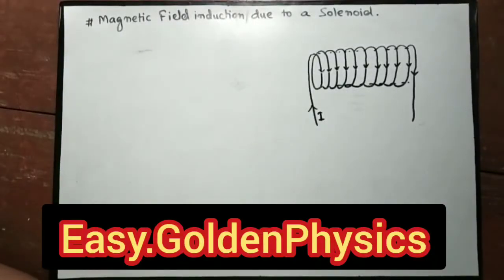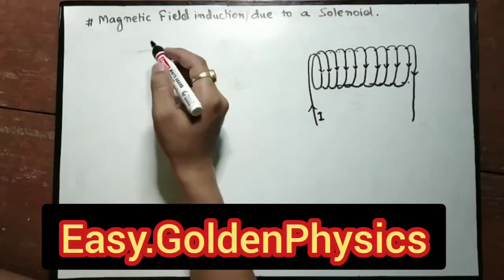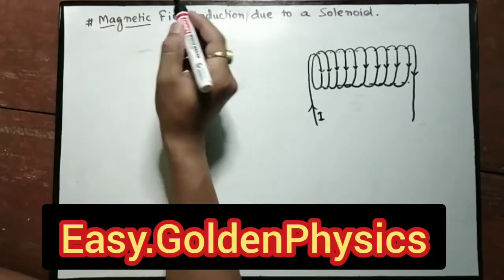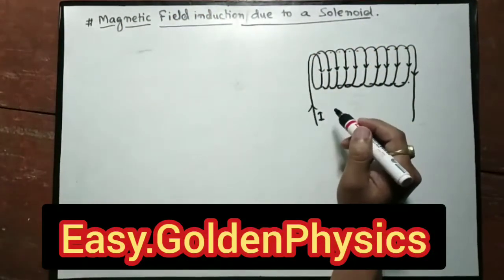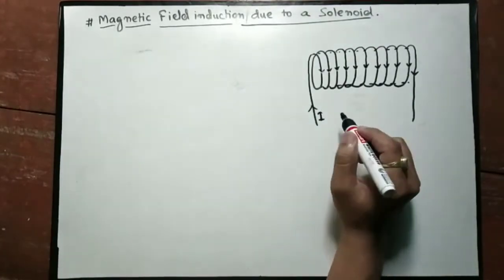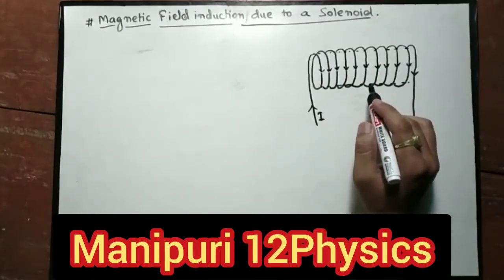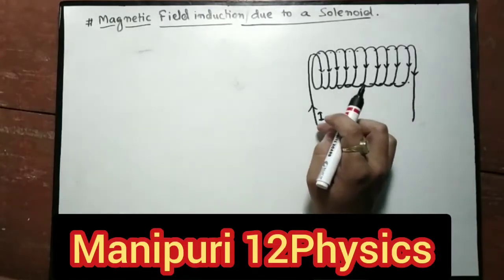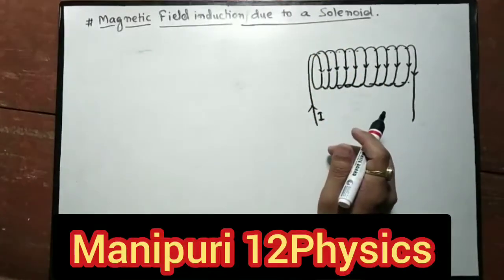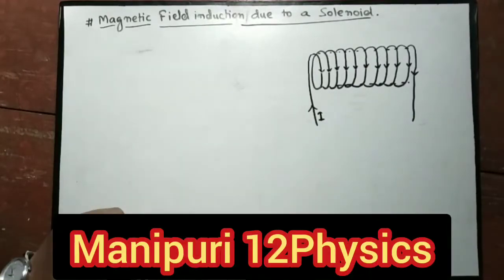The magnetic field induction is due to the solenoid. The magnetic field direction is determined by the right-hand thumb rule.